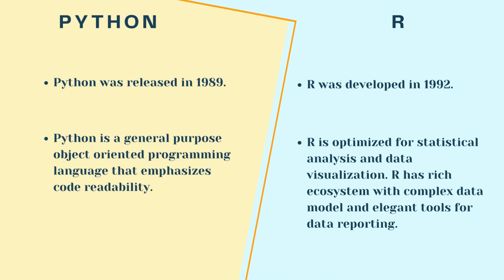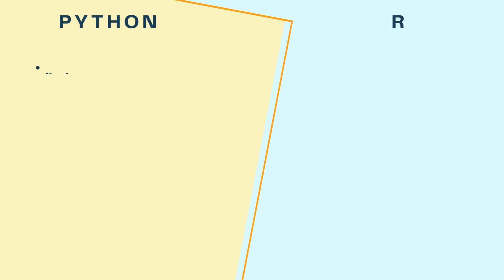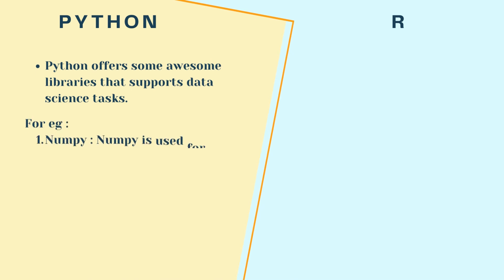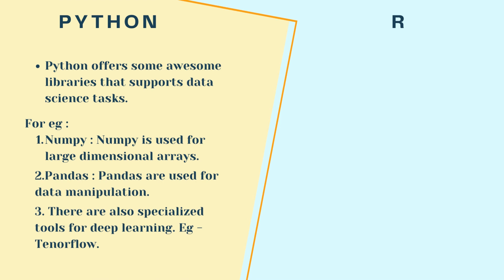R has a rich ecosystem with complex data models and elegant tools for data reporting. Python offers some awesome libraries that support data science tasks. For example, NumPy, which is used for large dimensional arrays. We have Pandas for data manipulation, and there are also specialized tools for deep learning, for example, TensorFlow.